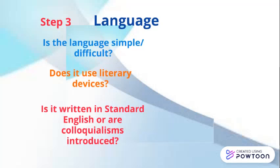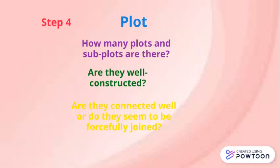Step four: have a look at the plot. How many plots are there? How many subplots are there? Are they well-constructed? Are they connected well, or do they seem to be forcefully joined? It is very essential that the plot and the subplot should be carefully intertwined, so you must comment upon that.